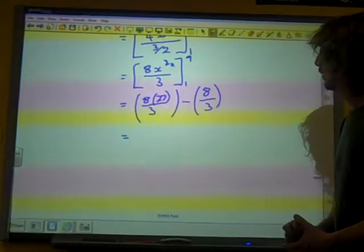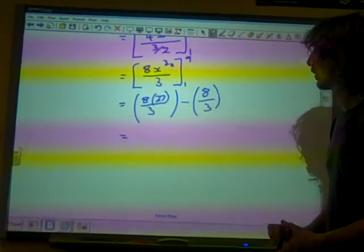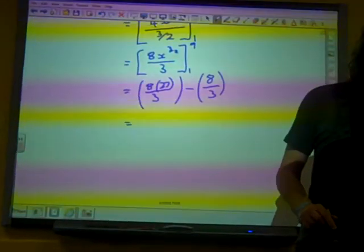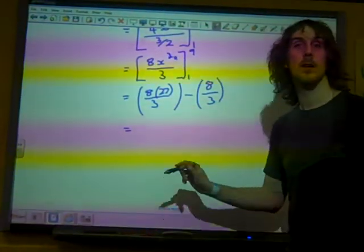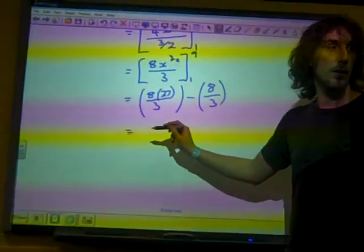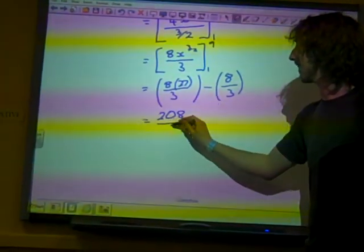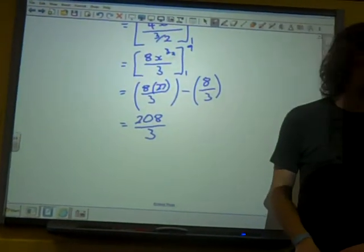What are we ending up with? Are we ending up with 208 over three?